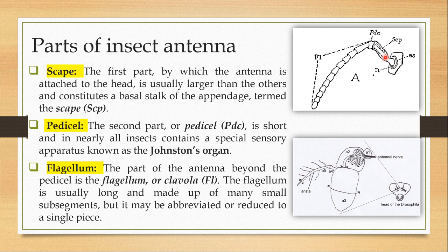The pedicel is short and in nearly all insects contains a special sensory apparatus known as the Johnston's organ. Johnston's organ is an assemblage of sensory cells and these are basically mechanoreceptors. So they help in perceiving vibrations and how to move the antennae. Johnston's organ is useful in locomotion and other such things.